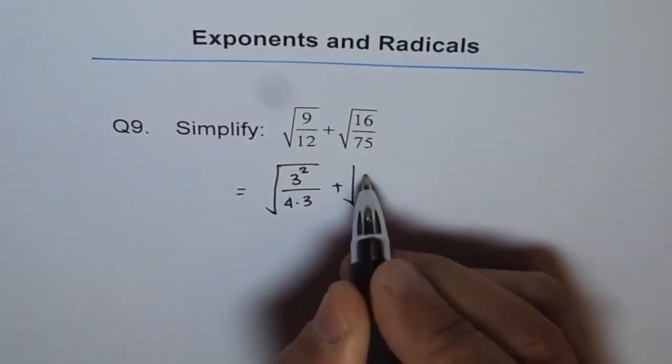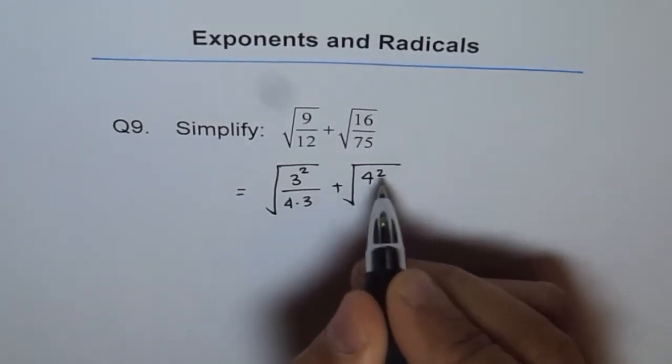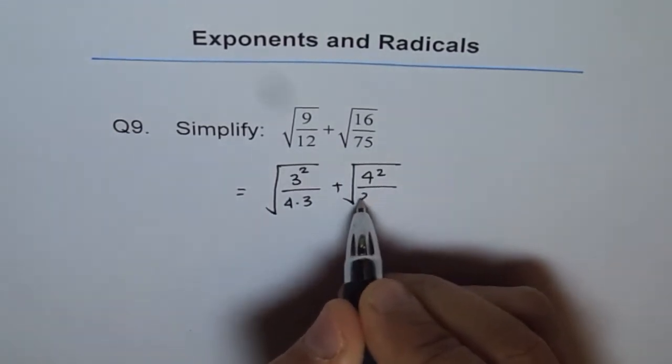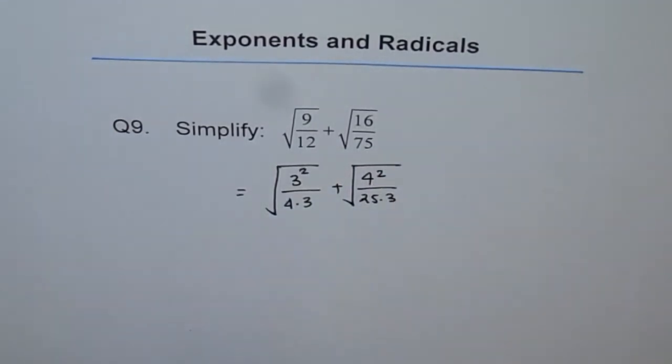Similarly, 16 is 4 squared, right? So let me write 4 squared and 75 is 25 times 3. Correct.